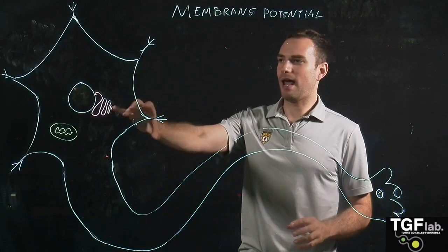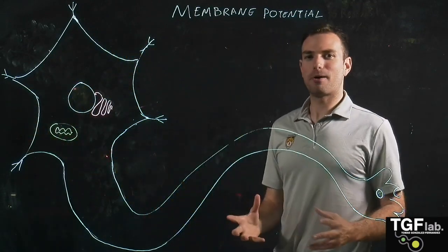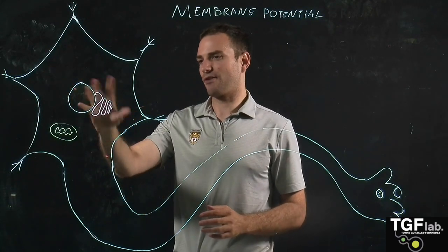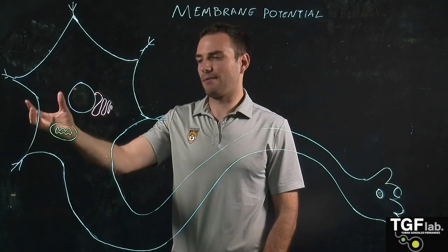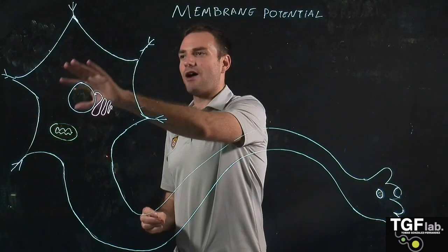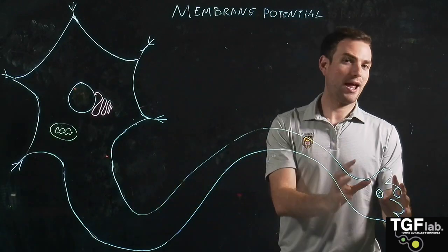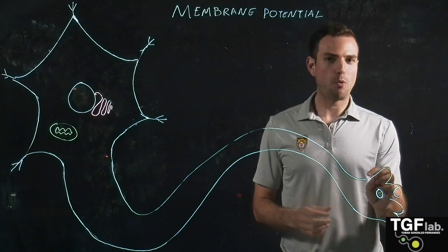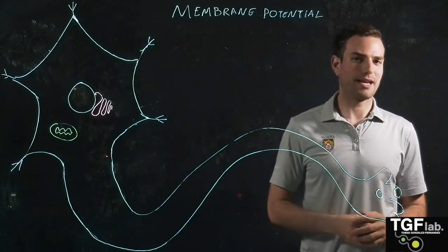First of all, here we have a neuron and the neuron has different parts. This part here is the neuronal body, which has the nucleus, the endoplasmic reticulum, and for example the mitochondria. Around the neuronal body we have the dendrites, then we have the axon, and finally we have the axon terminal and the synaptic terminals where the vesicles containing the neurotransmitters are going to be transmitted to the tissue or to the next neuron.